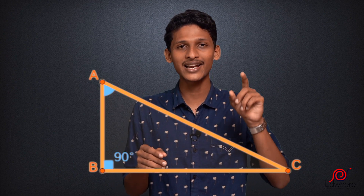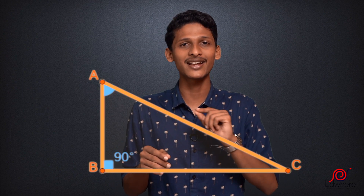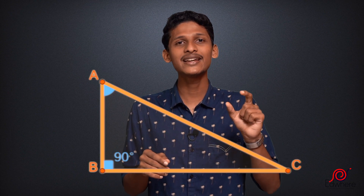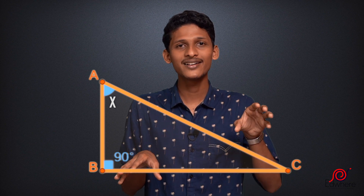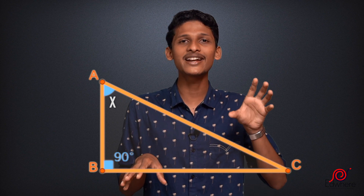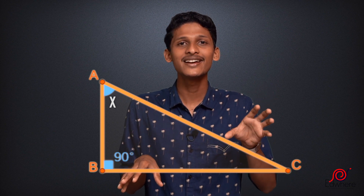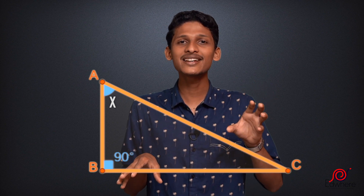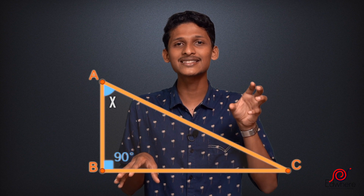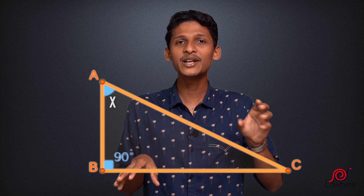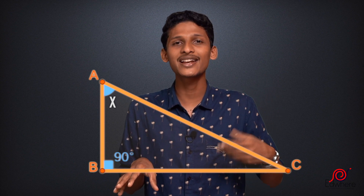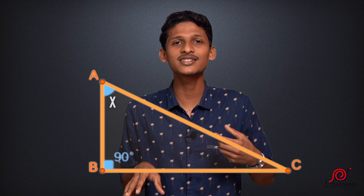This triangle is a right triangle. This triangle is marked by angle xn. This is the value of xn, and this is the angle of xn.